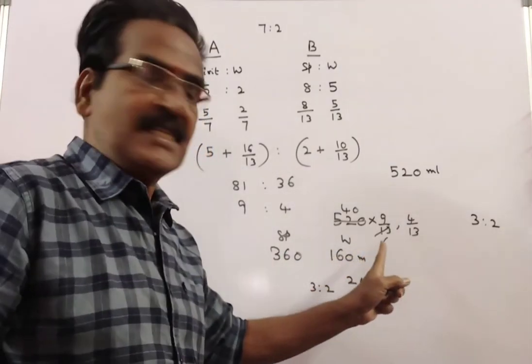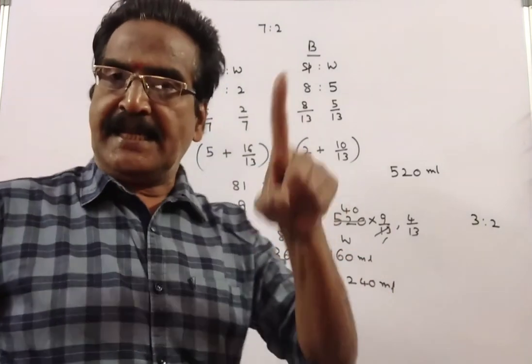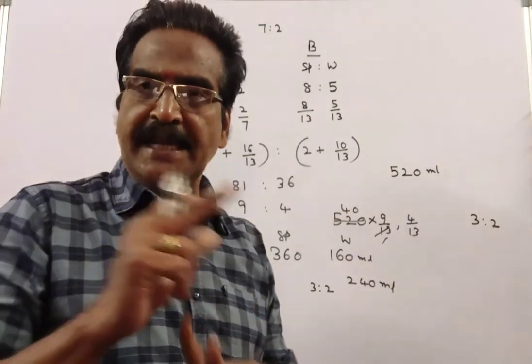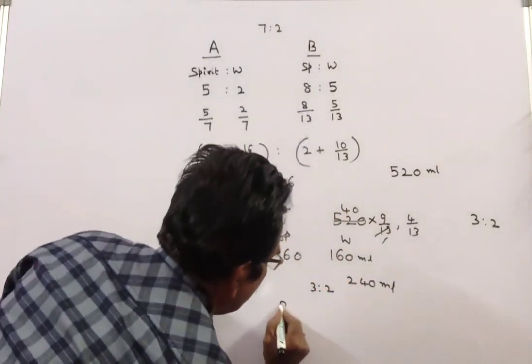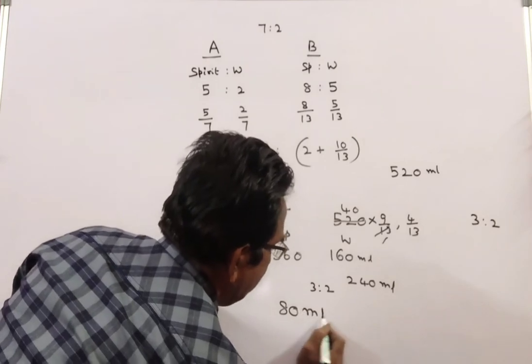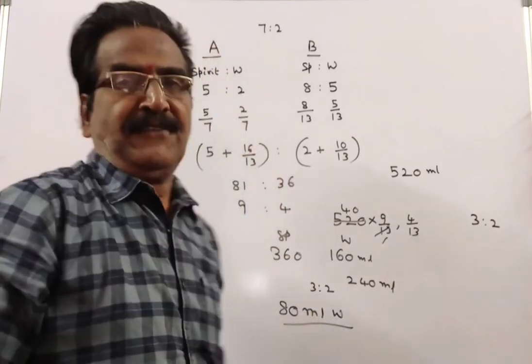So already we have 160 ml. 160 plus 80 is 240, so 80 ml of water should be added. Thank you.